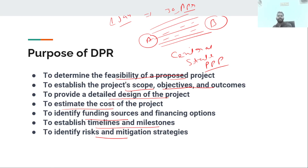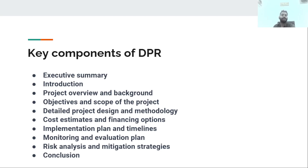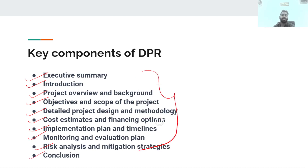What are the key components of DPR? First, the executive summary. Second, the introduction of the project — its overview and background. Third, the objectives and scope of the project. Fourth, the detailed project design methodology. Fifth, cost estimates and financing options. Sixth, the implementation plan and timelines. Seventh, the monitoring and evaluation plan. Eighth, risk analysis and mitigation strategies, and conclusions. All these points make up the detailed project report.